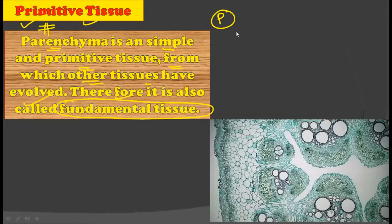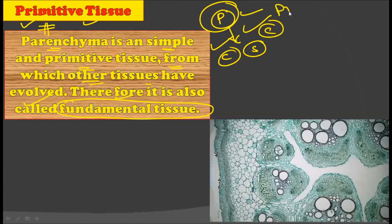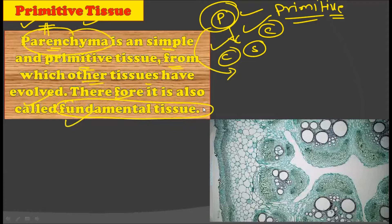This tissue was first formed in the plant kingdom during evolution, and from this parenchyma, other plant tissues such as chlorenchyma, sclerenchyma, and collenchyma have all formed. That is why parenchyma tissue is considered a primitive tissue. It is famously called the fundamental tissue. This is quite important from the MCQ examination point of view — a question often asks which simple permanent tissue is also called the fundamental tissue. The answer is parenchymatous tissue.